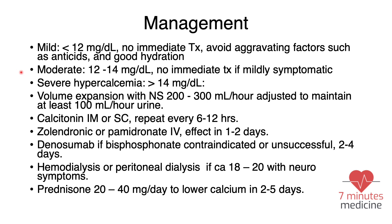If it's moderate with no symptoms, treat as mild. For severe hypercalcemia, the first step is volume expansion with significant IV fluids — 200 to 300 cc per hour — adjusted to maintain at least 100 to 130 cc urine output per hour. You can also use calcitonin given intramuscularly or subcutaneously. Give the first dose, assess response, then repeat every 12 hours — but give no more than four doses due to tachyphylaxis.